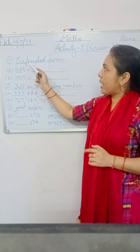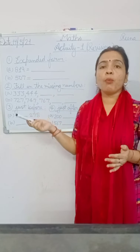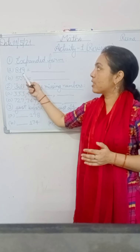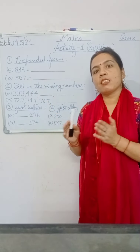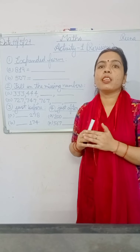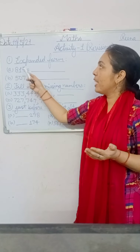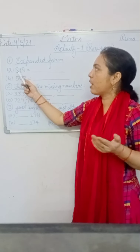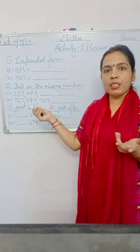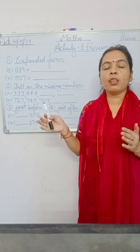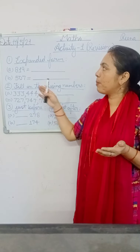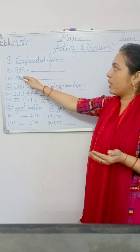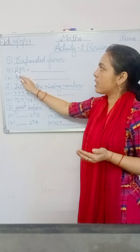Question number one is expanded form. Expanded form means we separate our digits with their places. Unke places ke saath mein hum digits ko separate karte hai. That means we show how many ones, how many tens, and how many hundreds are in the number — ones, tens, hundreds.